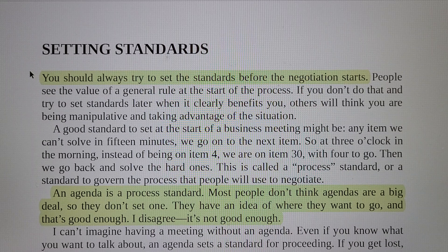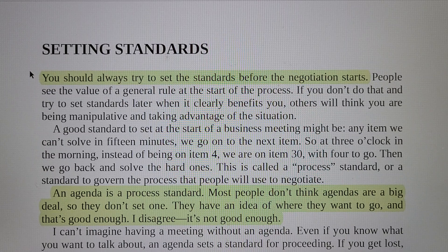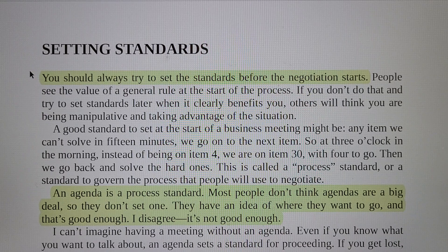A good standard to set at the start of a business meeting might be: any item you can't resolve in 15 minutes will go on to the next item. So at 3 o'clock in the morning, instead of being on item 4, we are on item 30 with 4 to go, then we go back and solve the hard ones. This is called the process standard — a standard to govern the process that people will use to negotiate.